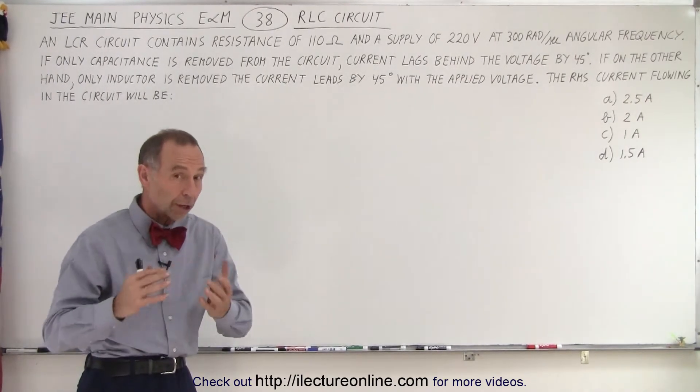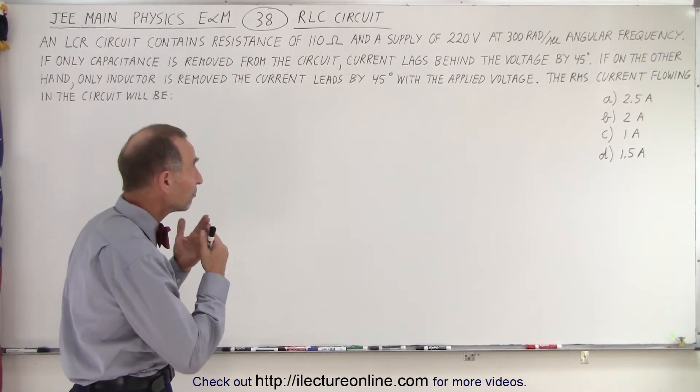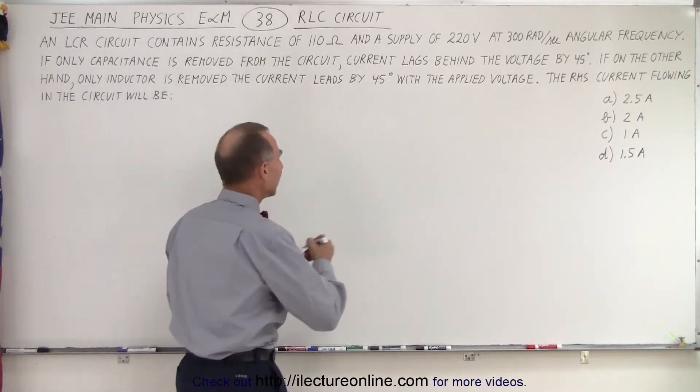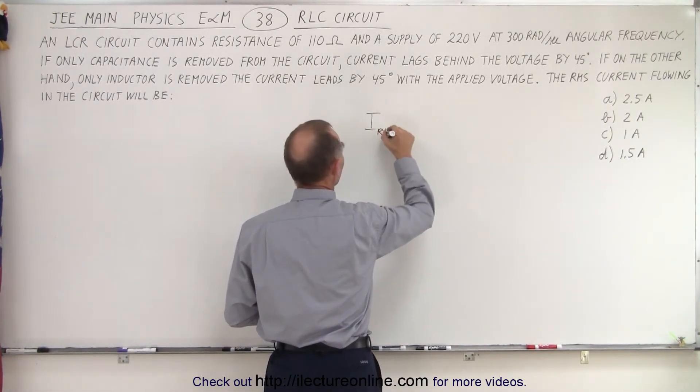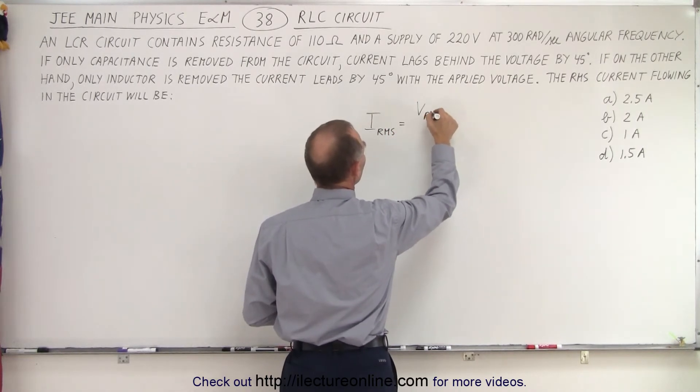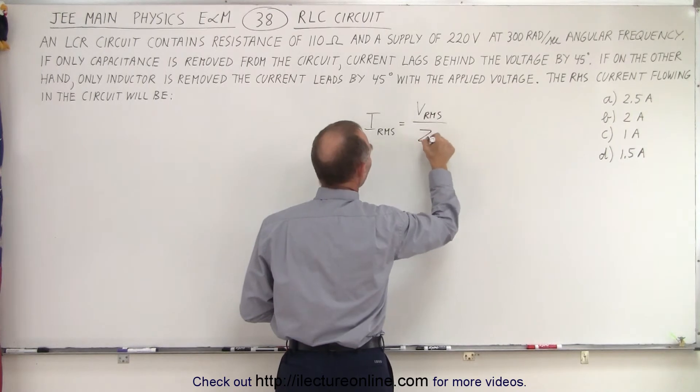So we're looking for the current, the RMS current with a 220 volts supply. And so essentially, what we can say then is the RMS current, IRMS, is going to be equal to the RMS voltage applied divided by the impedance.